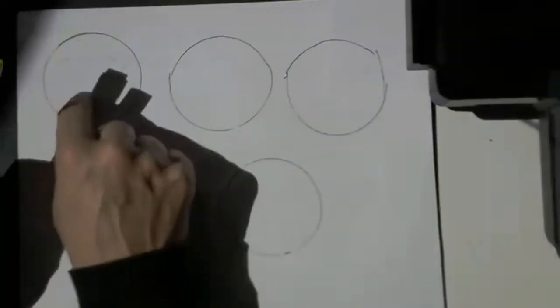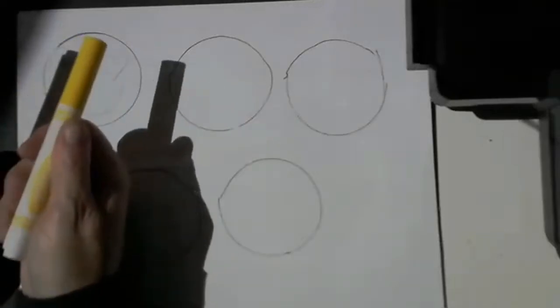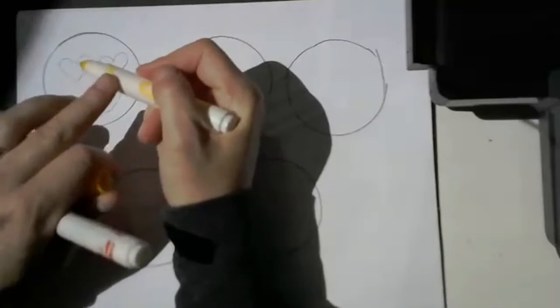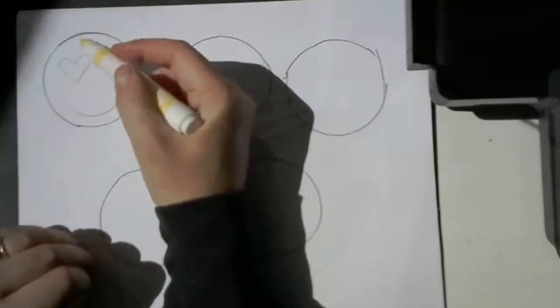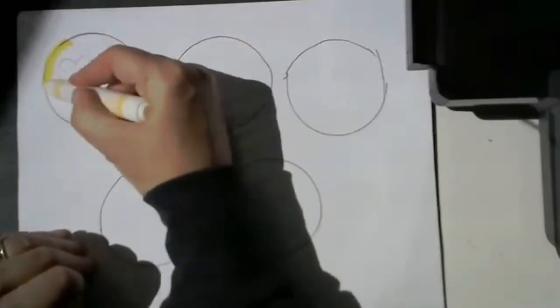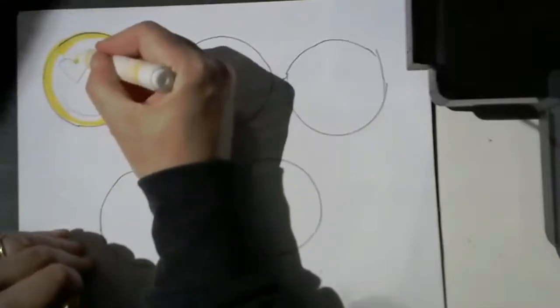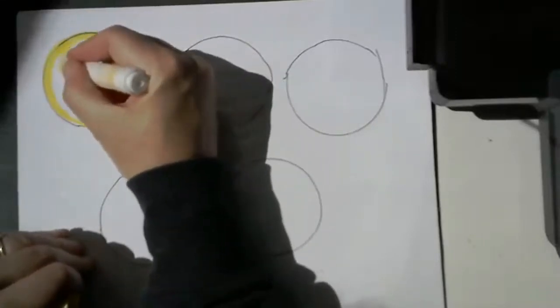Now I'm going to color this first one in. I always like to start with yellow if I'm using yellow so that it doesn't mess up the yellow marker if I go over another color. We don't want to sully that marker. I'm going to just color in my whole emoji face and avoid the heart areas.